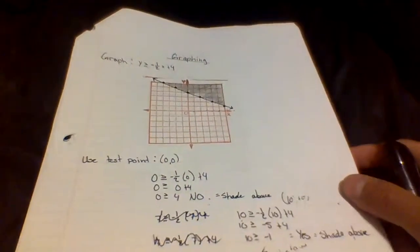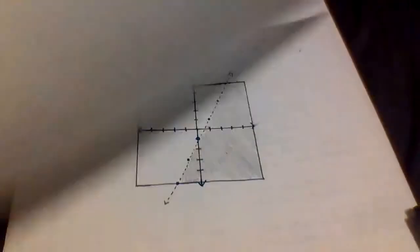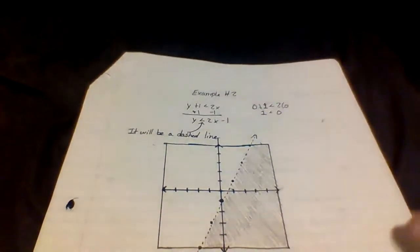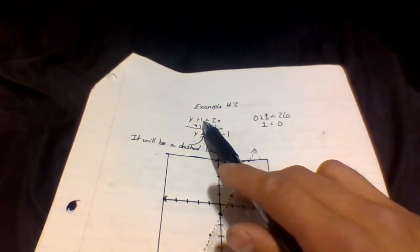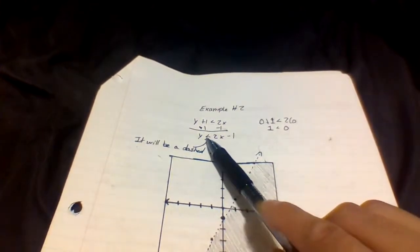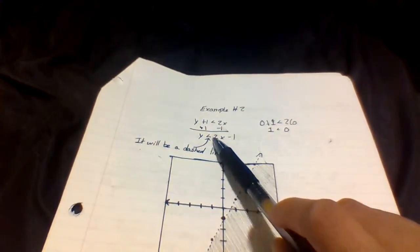And that's how you graph, shade, and determine whether your line is dashed or solid. Moving on to example number 2. My linear inequality is y plus 1 is less than 2x. To put it in slope-intercept form, I subtract 1 from both sides, leaving y is less than 2x minus 1. Being that it is strictly less than, I will use a dashed line.